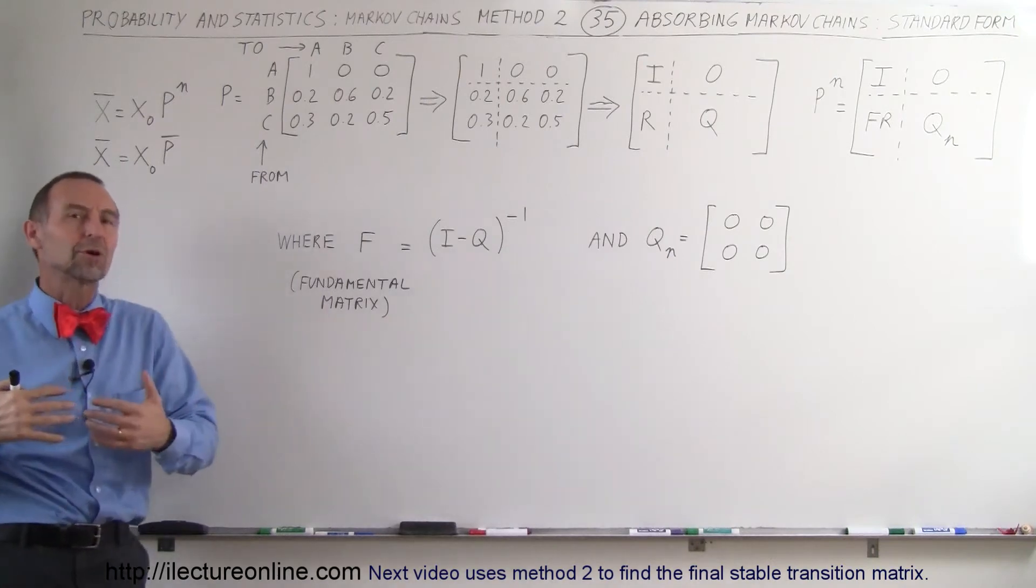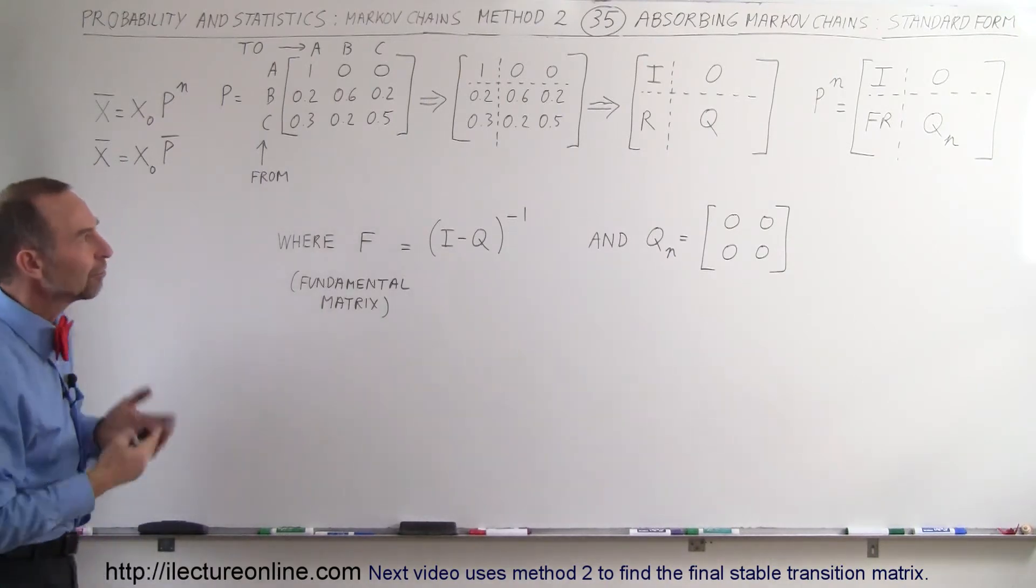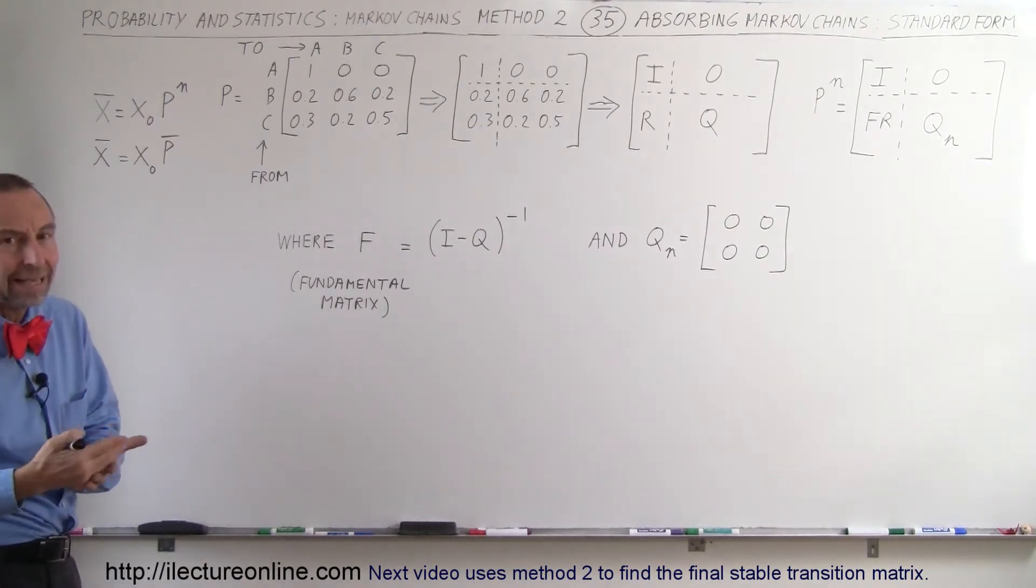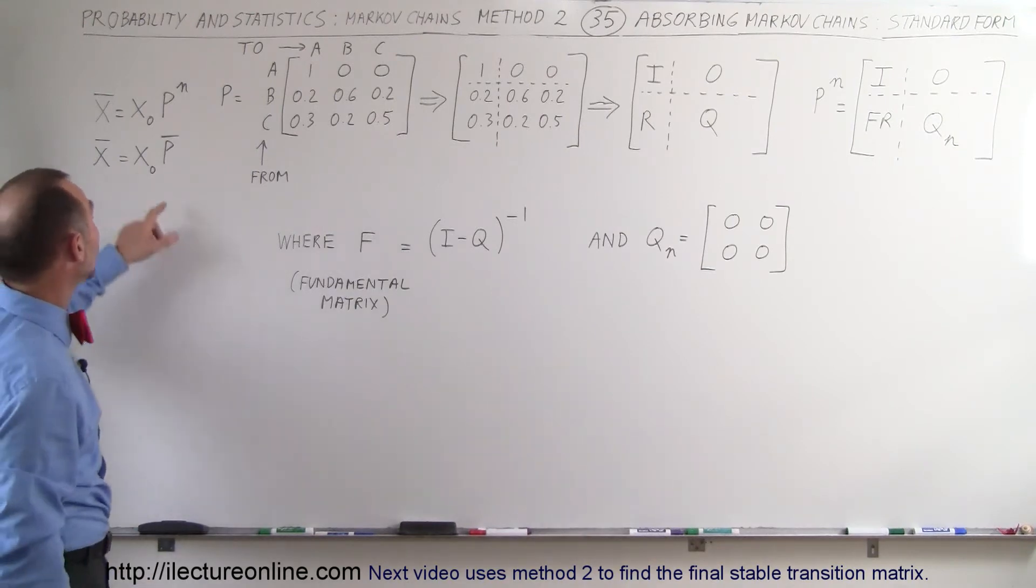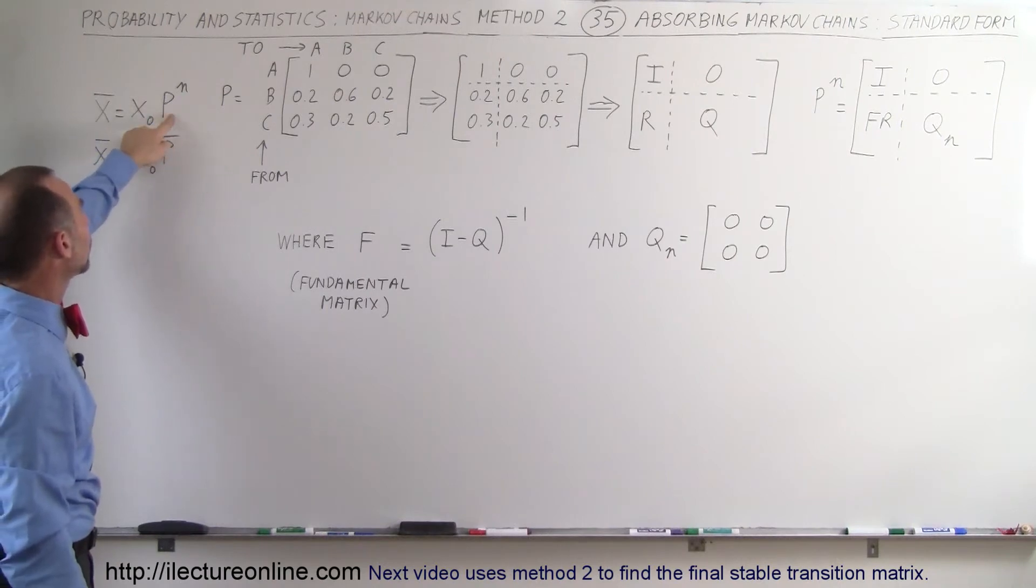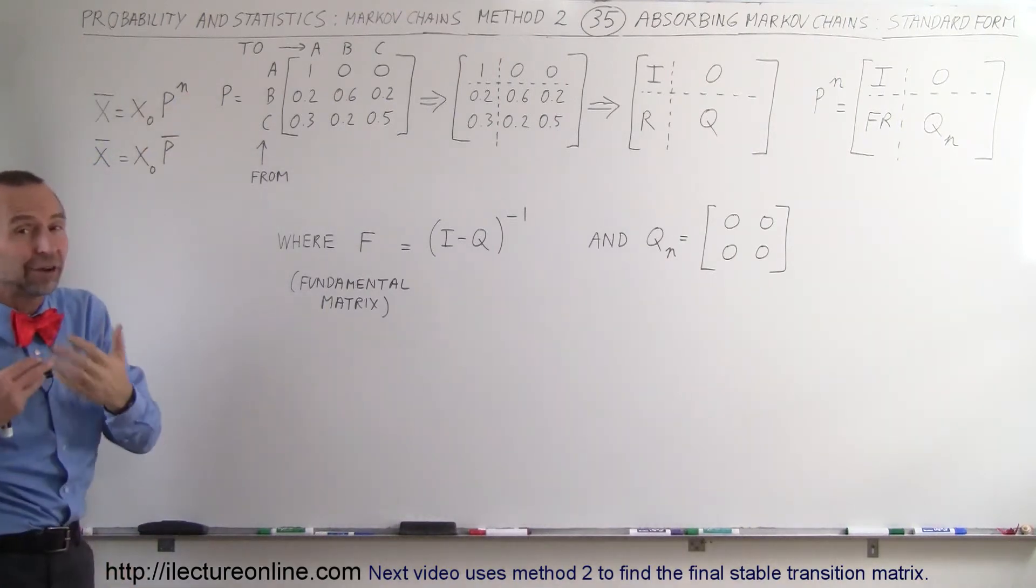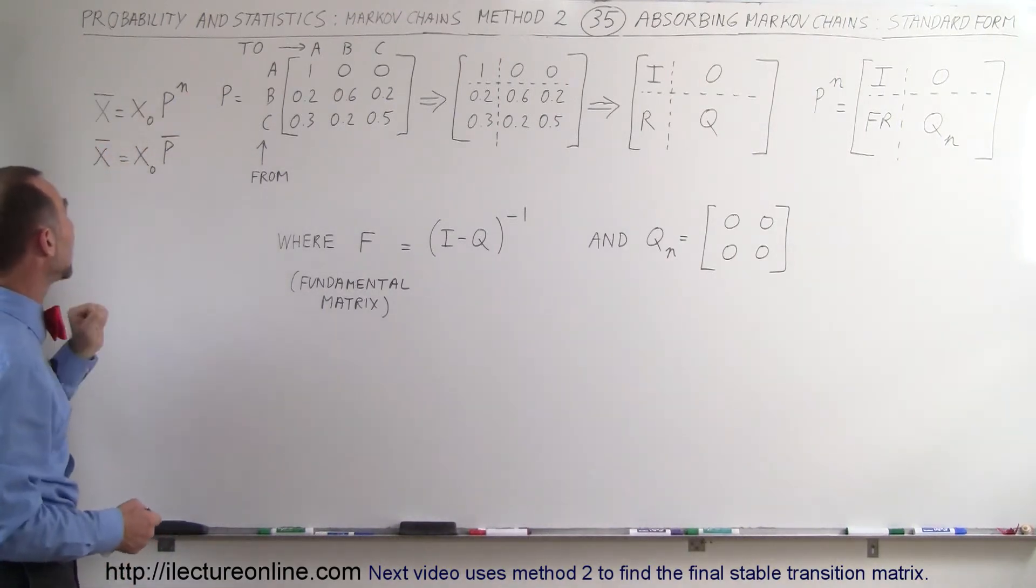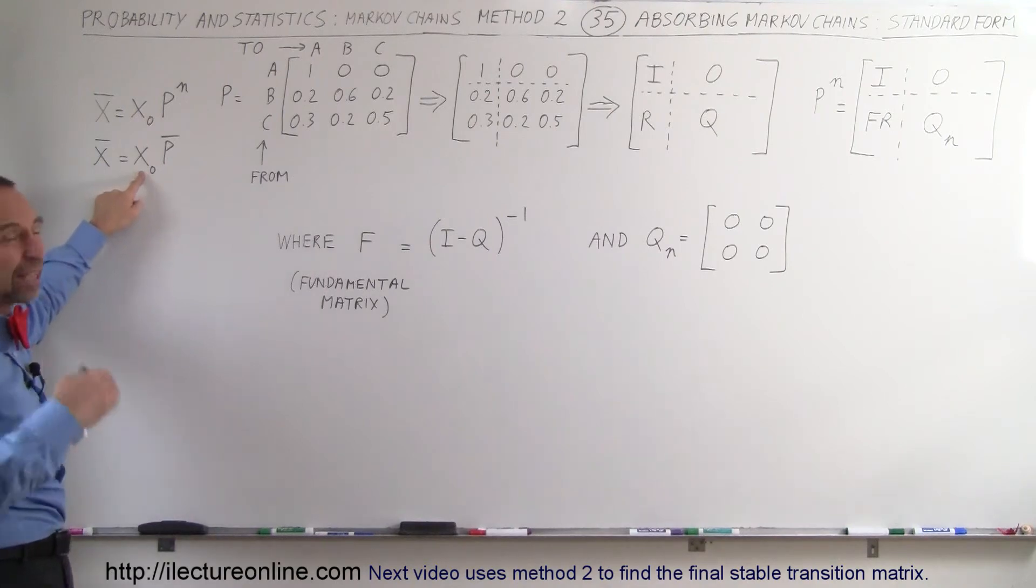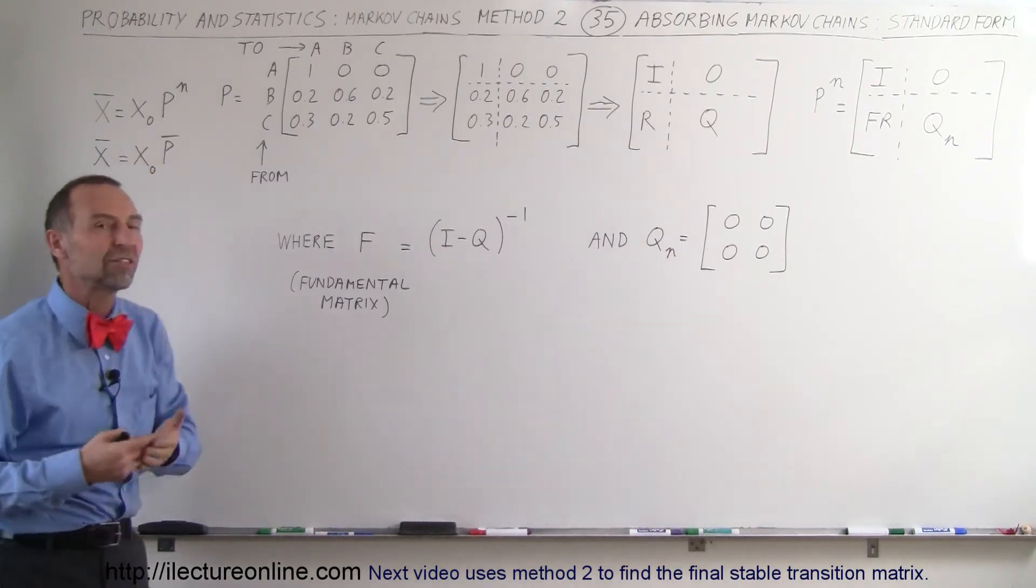Here we have what we call the standard form of how we calculate the end result. Notice that if we take the initial state and multiply it times the transition matrix to the n power, where n is a very large number, we'll end up with a stable matrix. The stable matrix can be found by taking the initial state matrix and multiplying that times the stable transition matrix.